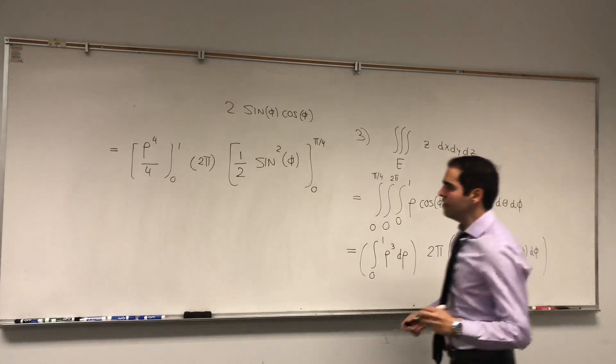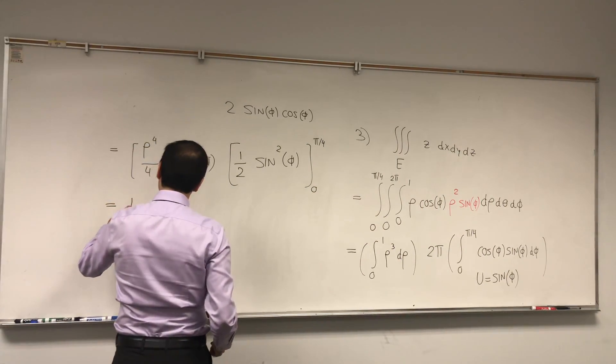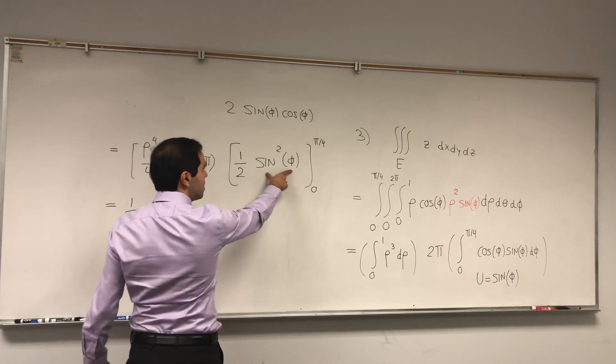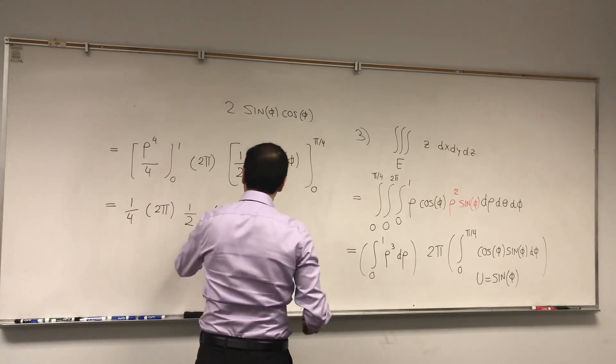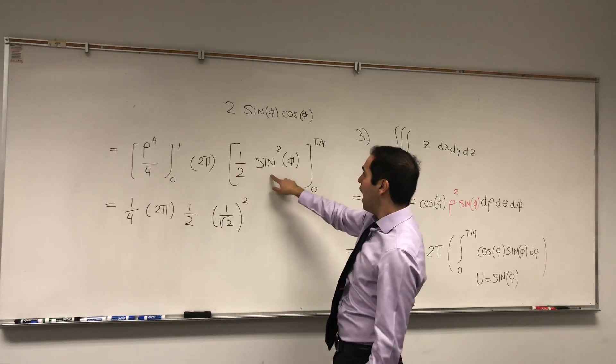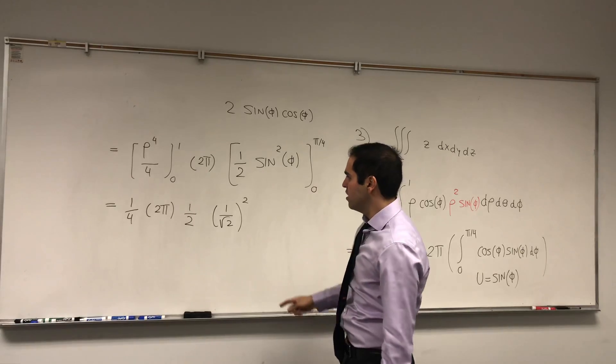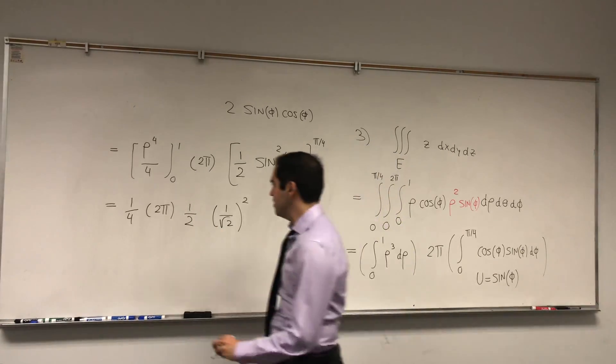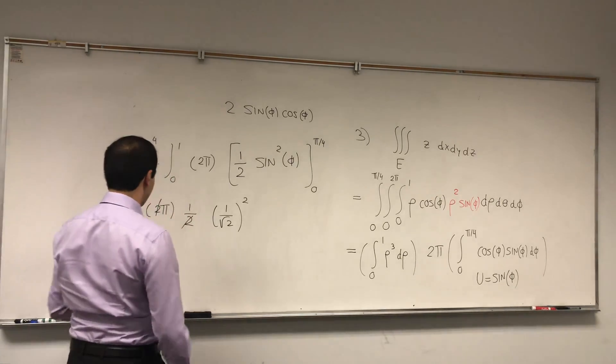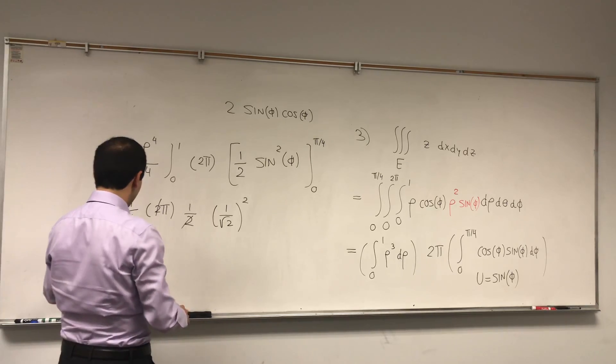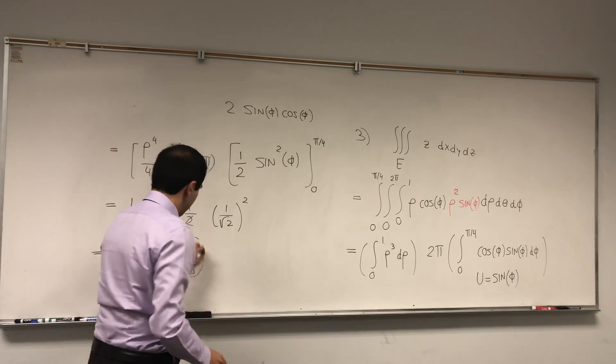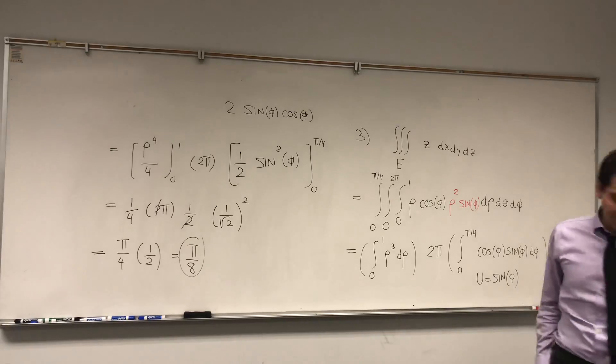And then, you just evaluate that, so here we get 1 fourth, here we get 2 pi, and then 1 half times, so sine of pi over 4, it's 1 over square root of 2. And then you square this, minus 1 half times 0 squared, which gives you 0. So in the end, what you have is just this expression. And well, what we get is the 2 cancels out, and then we get pi over 4 times 1 half, and I believe this gives you pi over 8. Let me just double check. Yes, this does look correct.